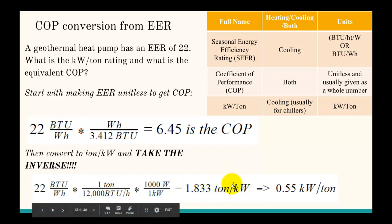To take the inverse of this, we just put one divided by 1.833, and we get 0.55 kilowatts per ton.